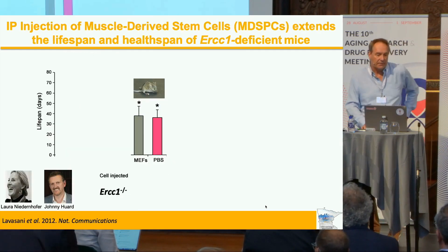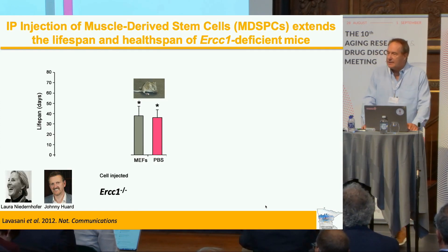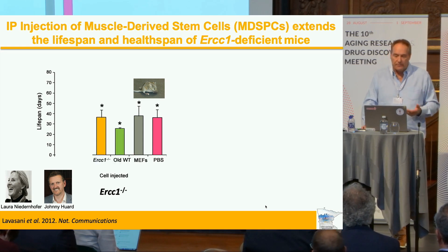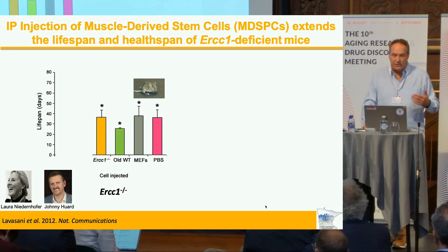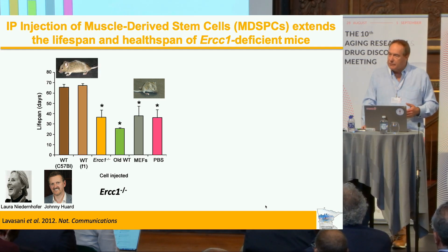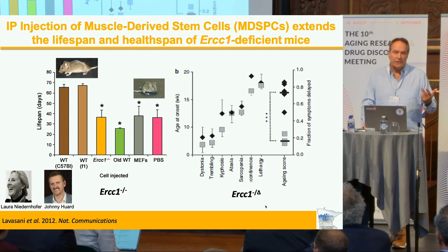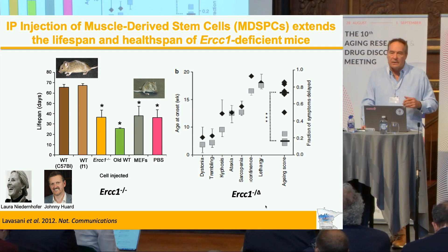This story started some ten years ago with Johnny Huard and Laura Niedernhofer. We tested the ability of young adult stem cells — in this case muscle-derived stem cells — to extend the lifespan of a very severe progeria model, the ERCC1-deficient mouse. If you inject MEFs into these mice, there's no effect — they live only one month. If you inject stem cells from progeria mice or naturally-aged wild-type mice, there's no effect on lifespan. But if you inject young, healthy muscle-derived stem cells, we can double, in some cases even triple, the lifespan of these mice. We went on to show that in a progeria model with a six-month lifespan, two injections of a few million stem cells delayed the onset of pathologies and reduced their severity. So adult stem cells can extend lifespan and healthspan, at least in the progeria model.